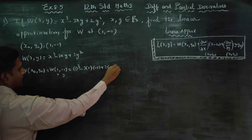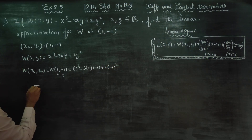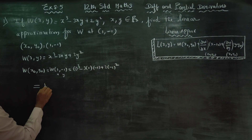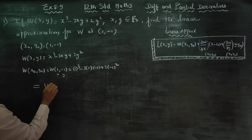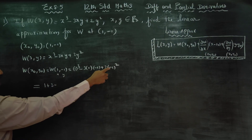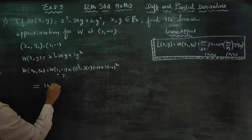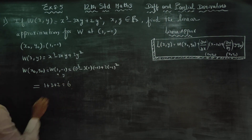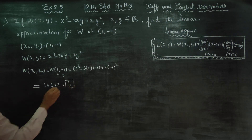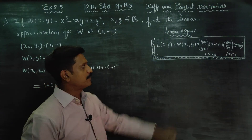Therefore, my answer will be: 1 minus (minus into minus) plus 3 — 1s are 3 — that is minus 1 squared plus 1, that is 2. Then the answer is 6. This is my w(x0, y0).